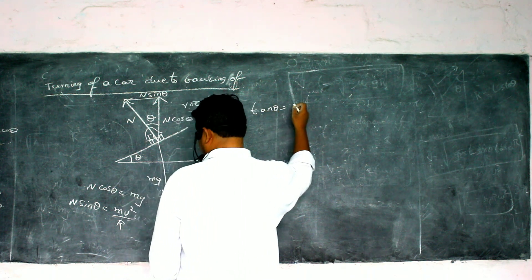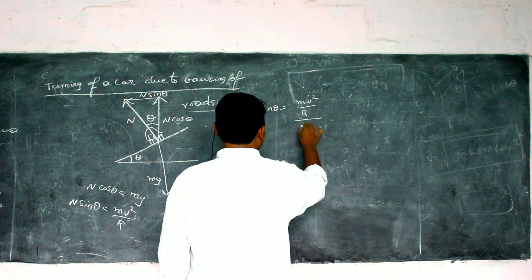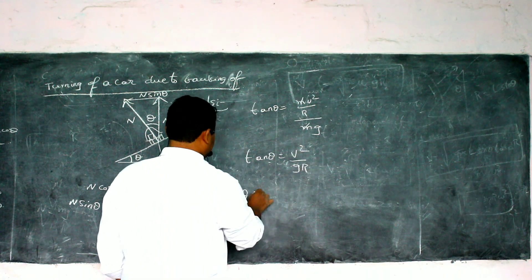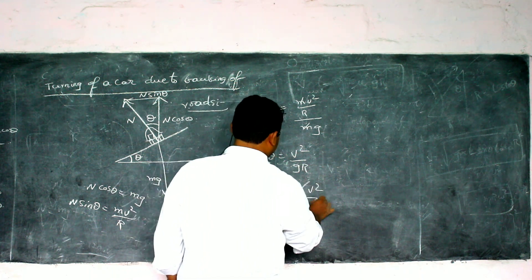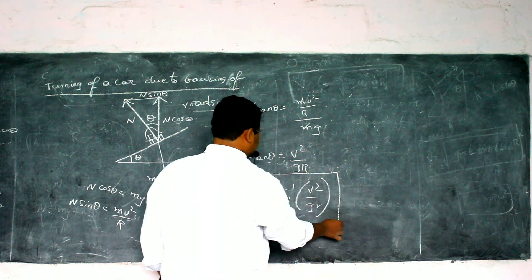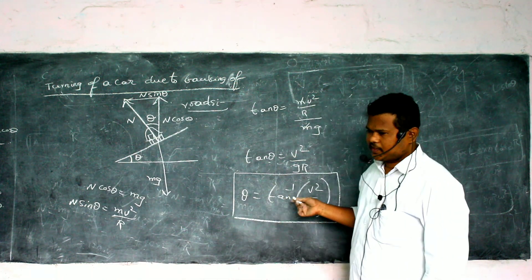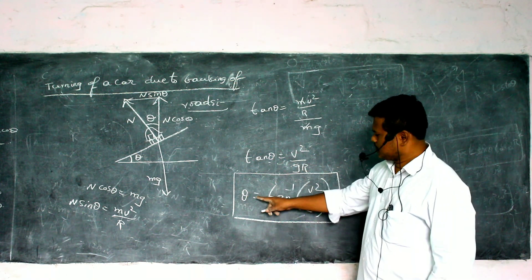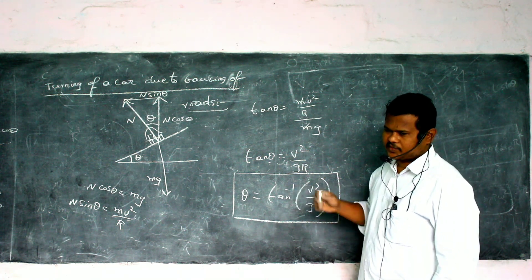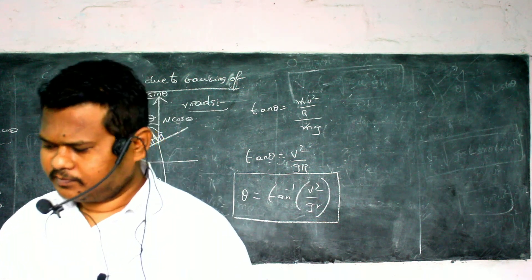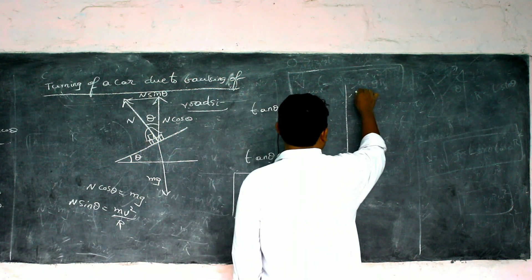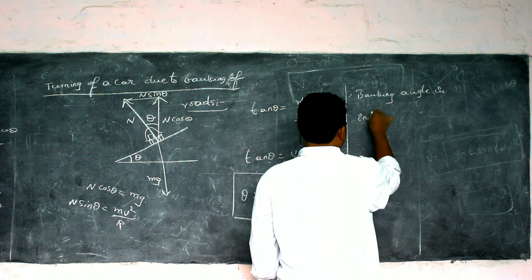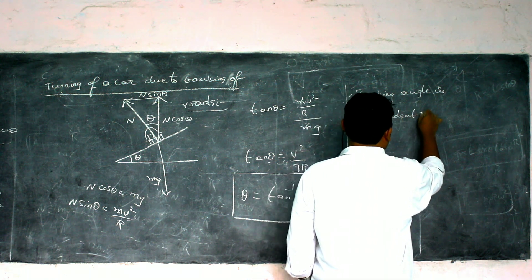Dividing N·sin θ = MV²/R by N·cos θ = Mg gives tan θ = V²/(gR). Therefore the banking angle is θ = tan⁻¹(V²/gR).